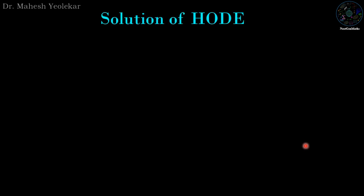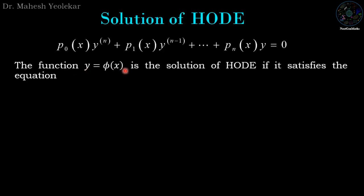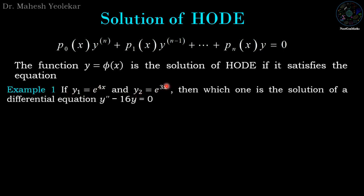The solution of an ODE is a function y = φ(x) that satisfies the equation — that is, if we substitute y and its derivatives into the equation, it is satisfied. For example, given y₁ = e^(4x) and y₂ = e^(3x), we check which is a solution of y'' - 16y = 0. If y₁ satisfies the equation it is a solution; if both satisfy, both are solutions.